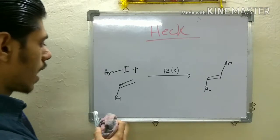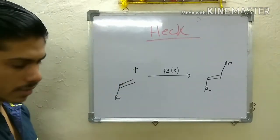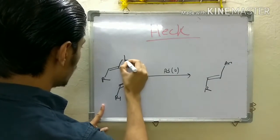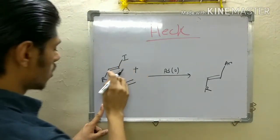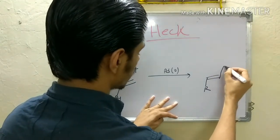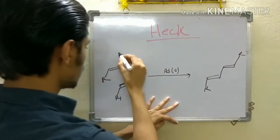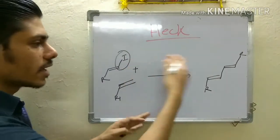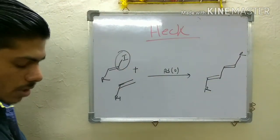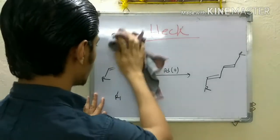Instead of an aryl halide, if you use a vinyl halide — let's say one that has trans configuration — then your product will also have trans configuration. So the stereochemistry of that center is retained in the product. This is your Heck reaction.